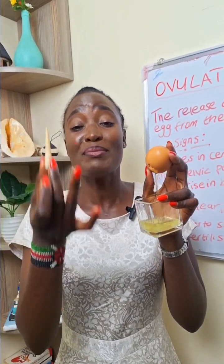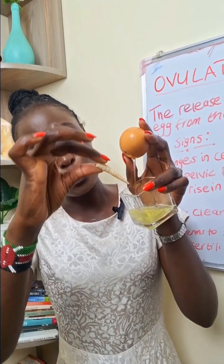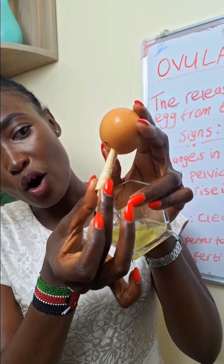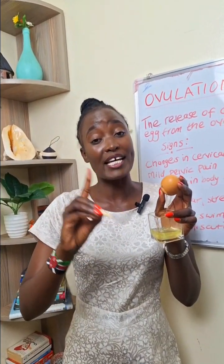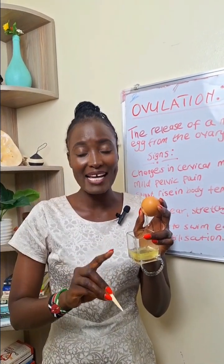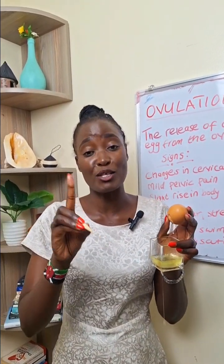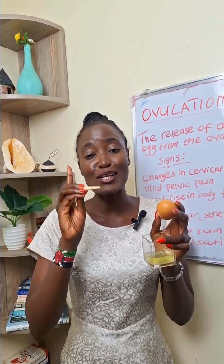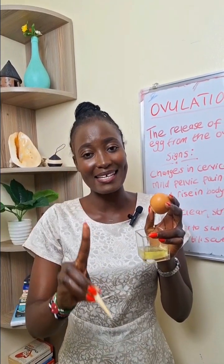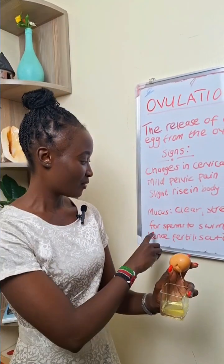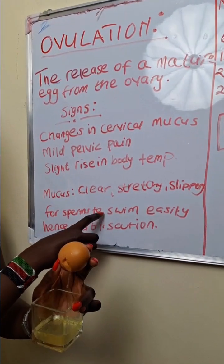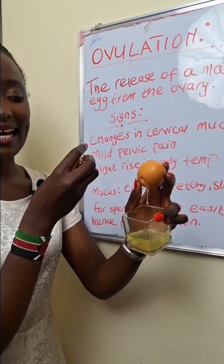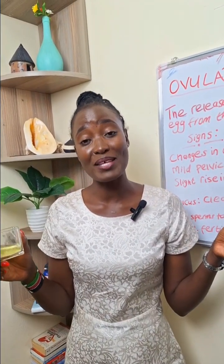It is clear, stretchy, and slippery for the sperm that comes from the man to swim and for fertilization to occur. That's why if you want to get pregnant, during your ovulation is the best time. And for ladies, if you do not want to get pregnant, this is the time you are not supposed to have unprotected sex. The mucus is clear, stretchy, and slippery for sperm to swim easily, hence fertilization.